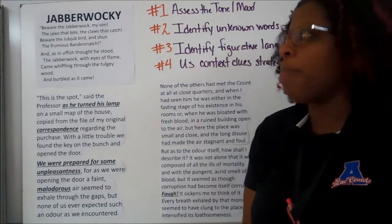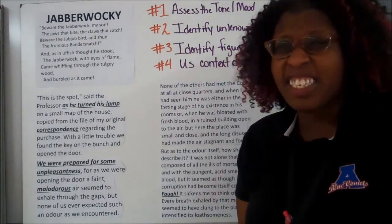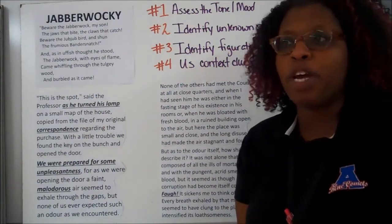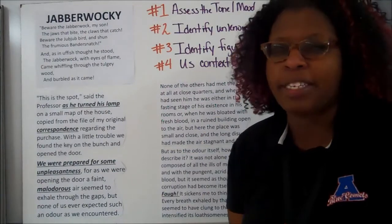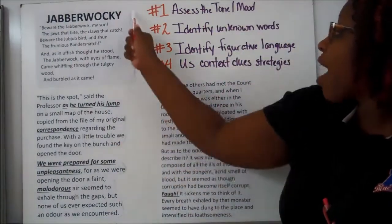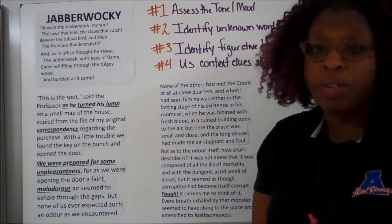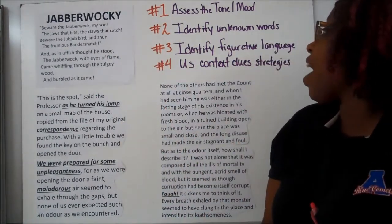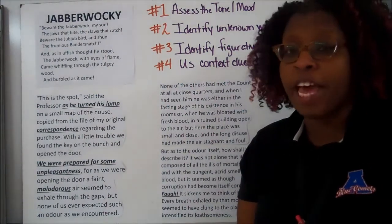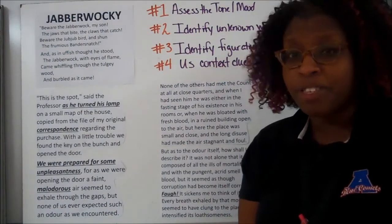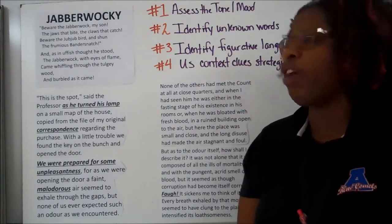Step four is all about mastering the context clues — those six context clue devices and strategies that we've been going over. Step five is we have to practice how to determine the word meaning. So how do we do that? Step one: set the tone and the mood. Step two: identify the unknown words in the text. Step three: identify the figurative language — similes, metaphors, personification. And then step five: use those context clue strategies.